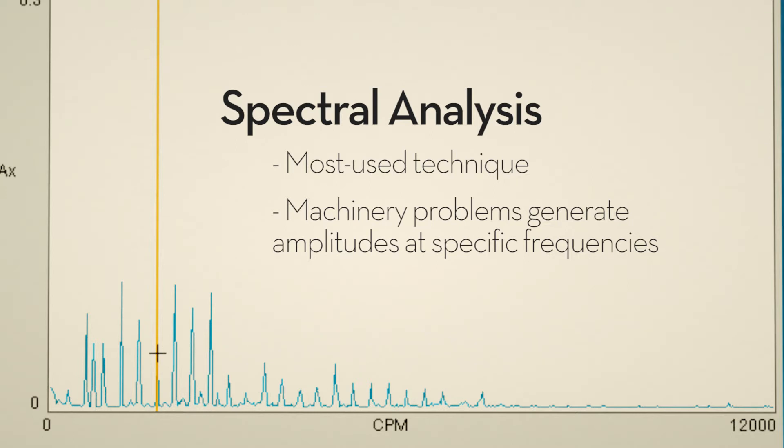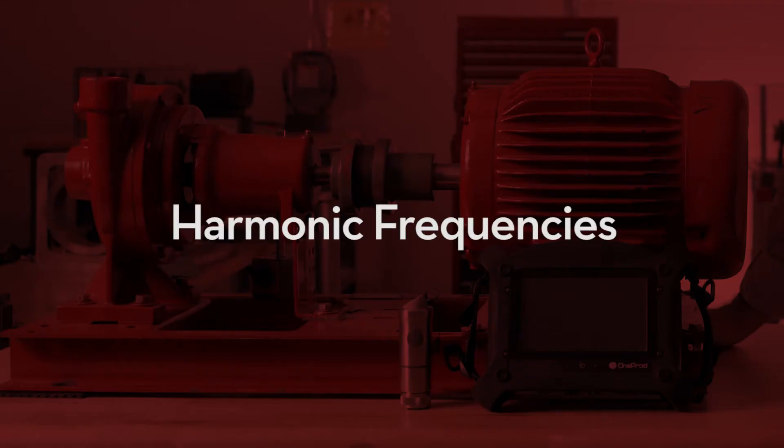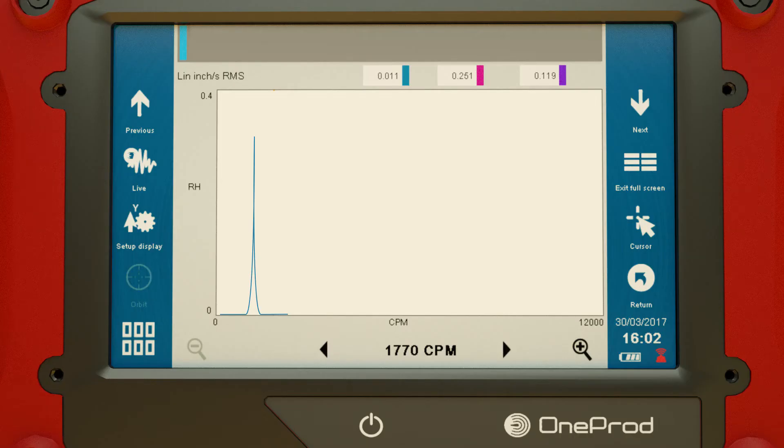The observed frequencies can be categorized as harmonic versus non-synchronous. Some problems occur at frequencies that are harmonically related to the rotational frequency. If a frequency in the spectrum is evenly divisible by run speed, it is considered a harmonic. We often express harmonics as multiples of RPM.